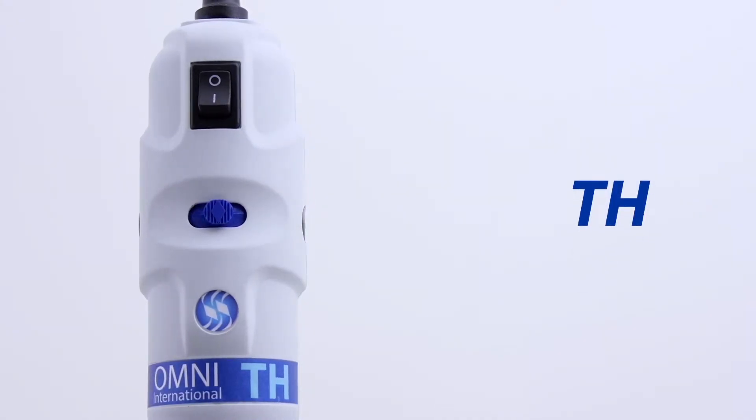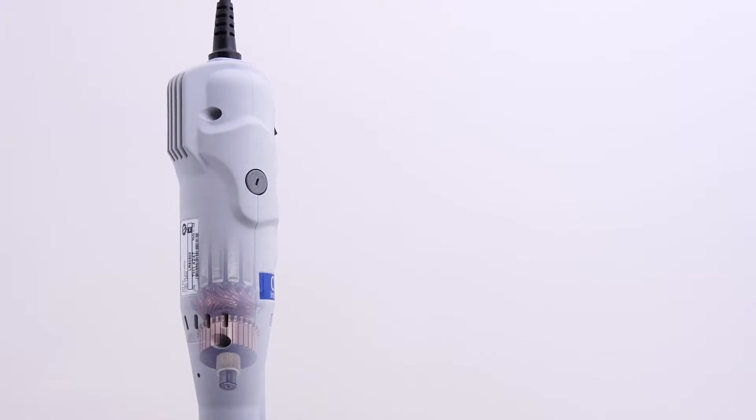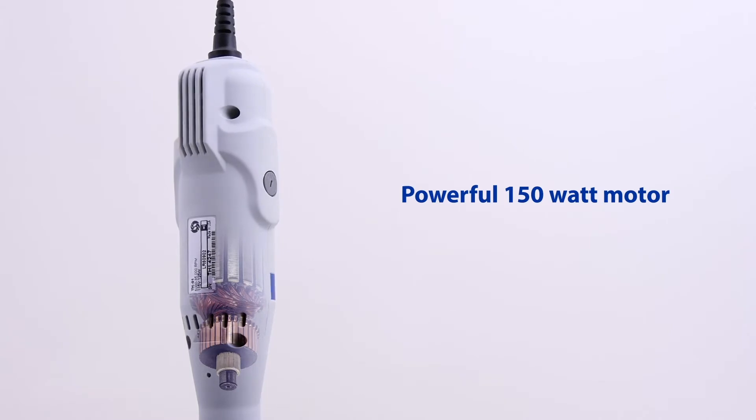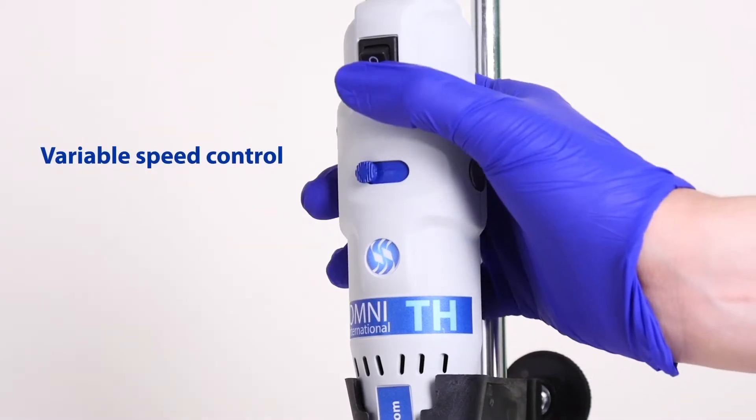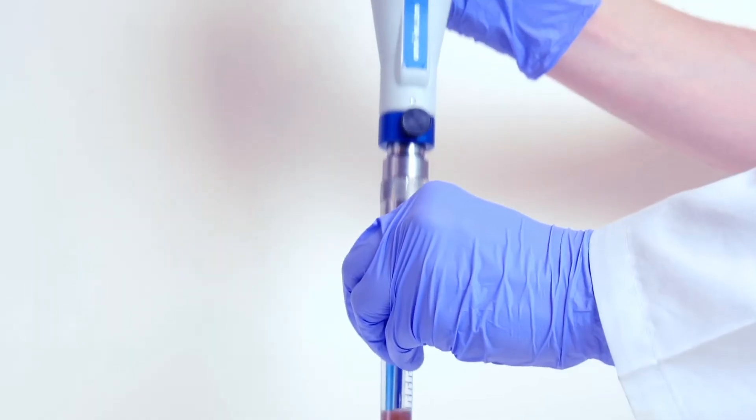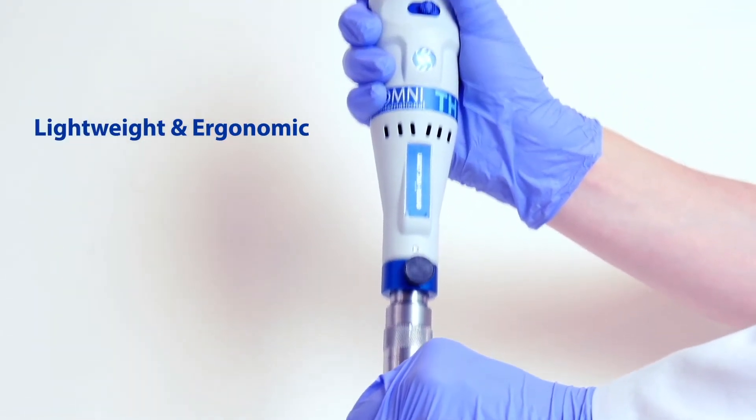The Omni TH tissue homogenizer is ideal for small-scale analytical laboratories. The TH features a powerful, compact 150-watt motor with variable speed control and separate on-off switch. The lightweight and ergonomic design make the TH a perfect fit for handheld operation.